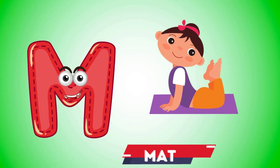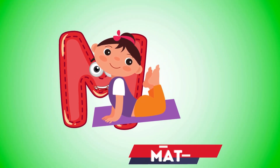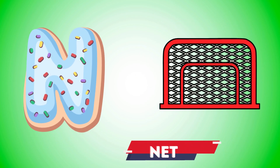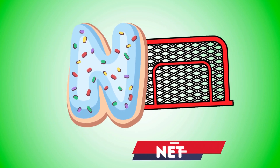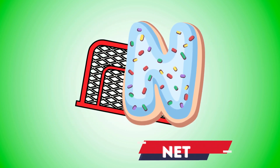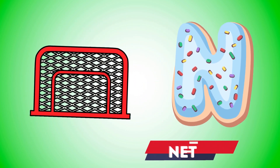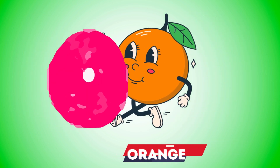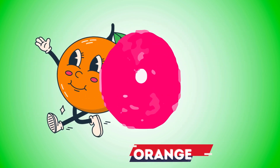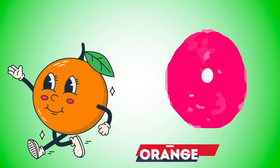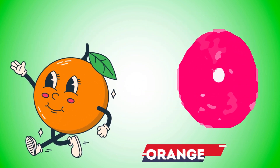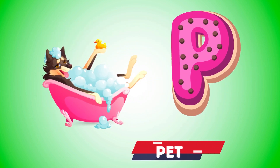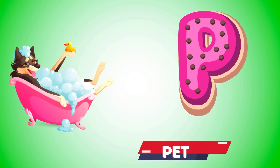M is for mat, m-m-mat. N is for net, n-n-net. O is for orange, o-o-orange. P is for pet, p-p-pet.